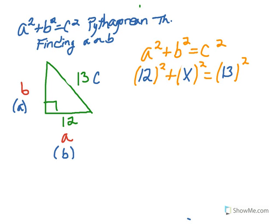So we end up with 12 squared plus X squared equals 13 squared. If you had done it the other way, you would have had X squared plus 12 squared equals 13 squared. Because of the commutative property of addition, both will result in the same answer.